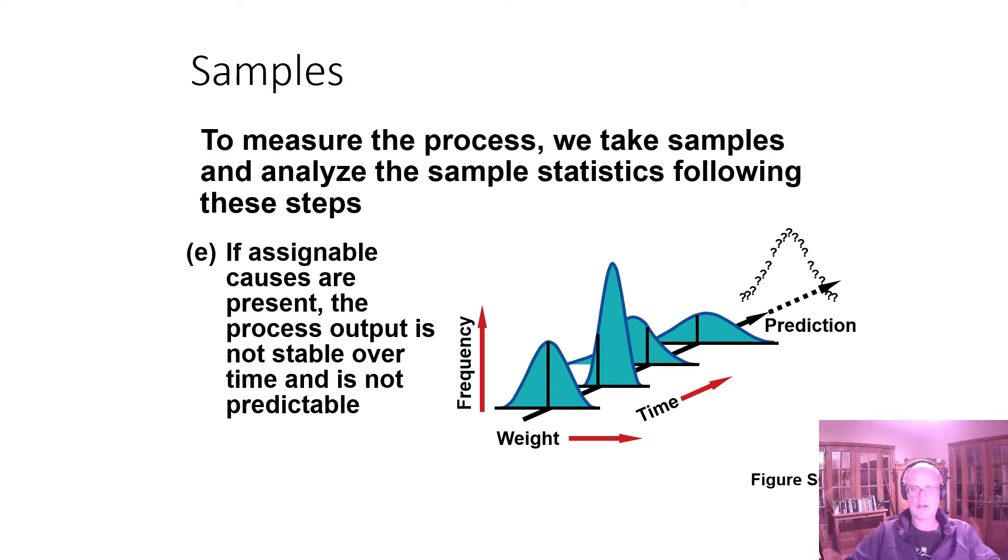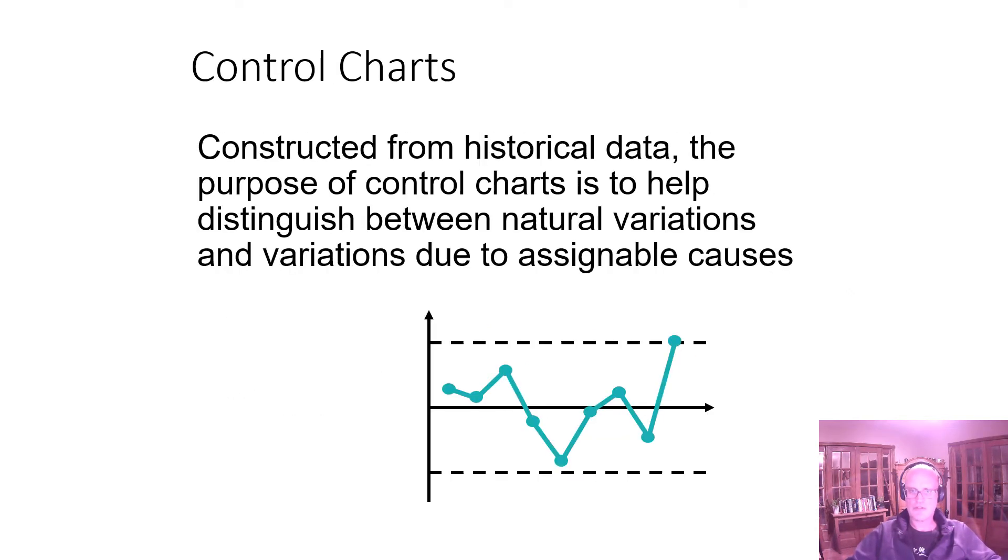If assignable causes are present, the process output is not stable over time and is not predictable. So we have this to start, all of a sudden this is off to the one side, this one is off to the other side. And so now we have things that are changing and our output isn't consistent. Even if that is narrower, something has changed. It's narrower, but it's off center. So something has changed. So we want a measure of both central tendency and variation. And we'll talk about that more as we get into statistical process control in more detail.